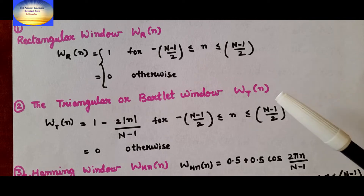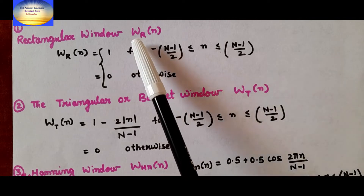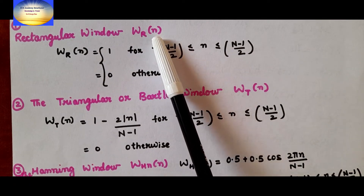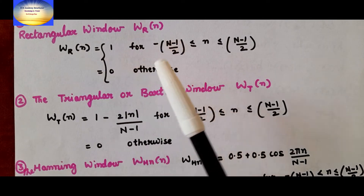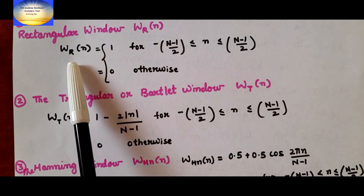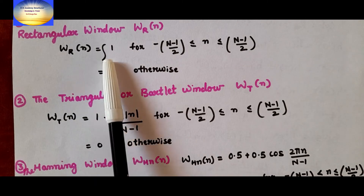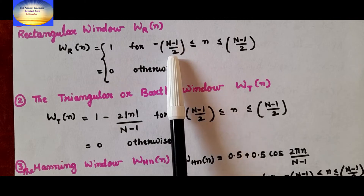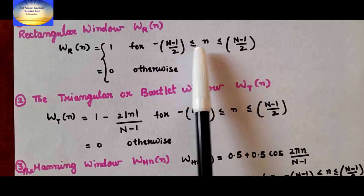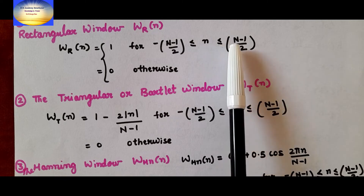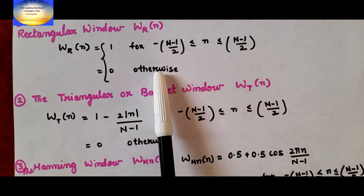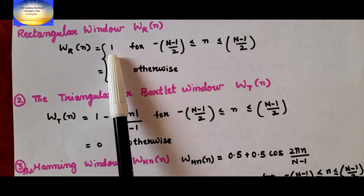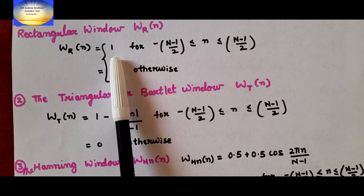Let us see the first definition of the rectangular window, designated by W_R(n). A window is a finite weighing sequence. The rectangular window definition is: W_R(n) = 1 for -(N-1)/2 ≤ n ≤ (N-1)/2, and 0 otherwise. In this range, the W_R(n) value is 1 — a very easy definition.